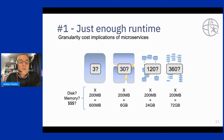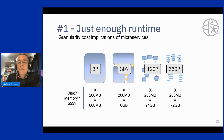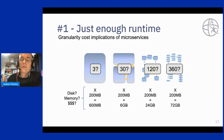For example, if we've got a 200-megabyte runtime, for a monolith with an HA deployment that might be 600 megabytes total. If we move to macro services with 10 services scaled the same way, that's 6 gigabytes. If we move to micro services with 120 instances, that's 24 gigabytes. If we move to functions with 360 instances, that's 72 gigabytes. And these are all very real costs.